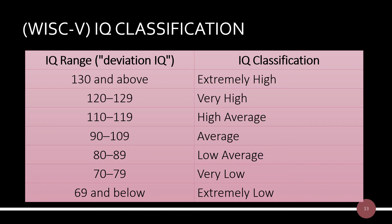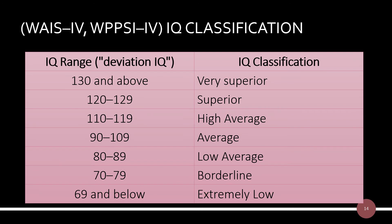According to the WISC-5 IQ classification, individuals falling in the IQ range of 130 and above are extremely high in intelligence. If the IQ is 69 or below, then the individual's intelligence is said to be extremely low. If the IQ score is 130 and above, the individual has very superior intelligence; if 69 and below, the individual is extremely low in intelligence. This classification also applies to the WAIS-4 and WPPSI-4 scales.